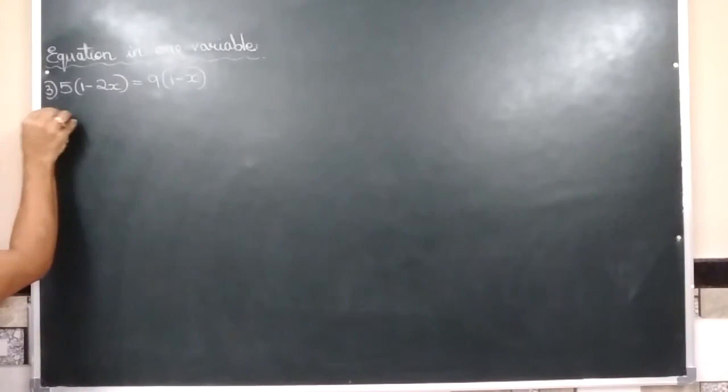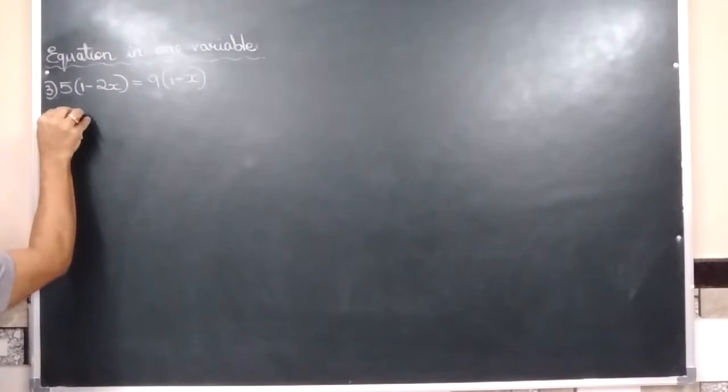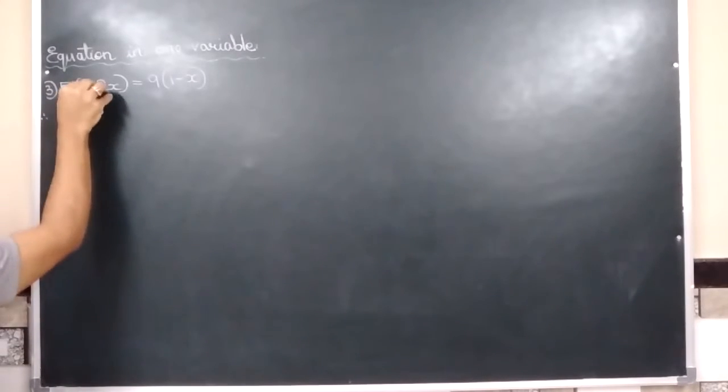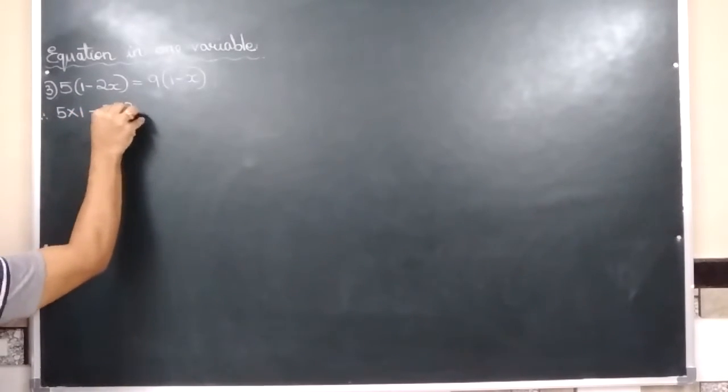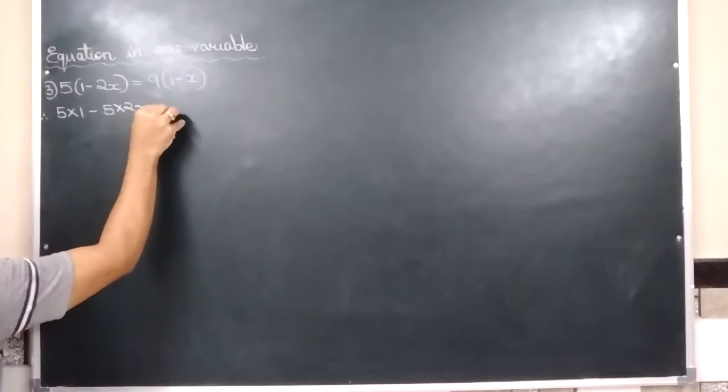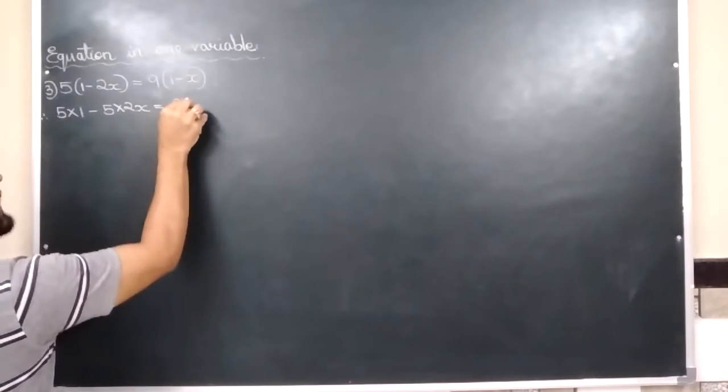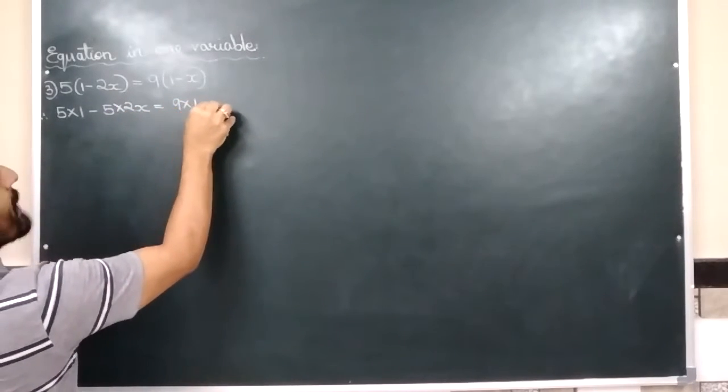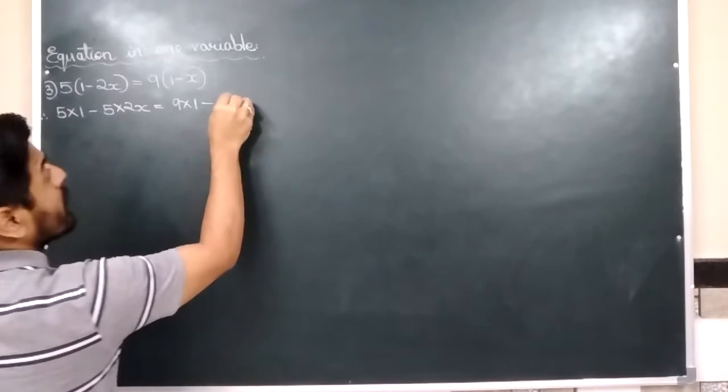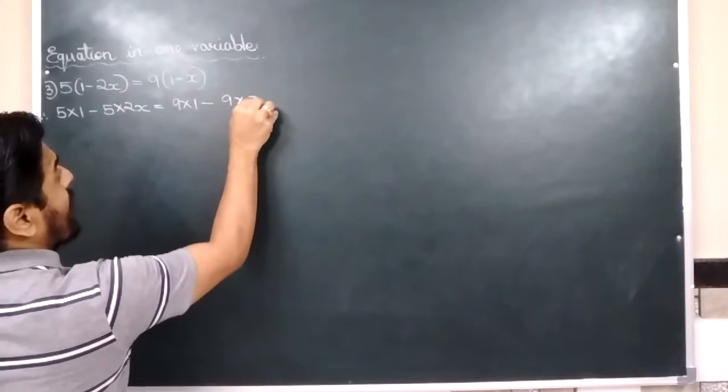So without wasting time let us start. 5 multiplied by 1 minus sign brought down. 5 multiplied by 2x equal to sign brought down. 9 multiplied by 1 minus sign brought down. 9 multiplied by x.